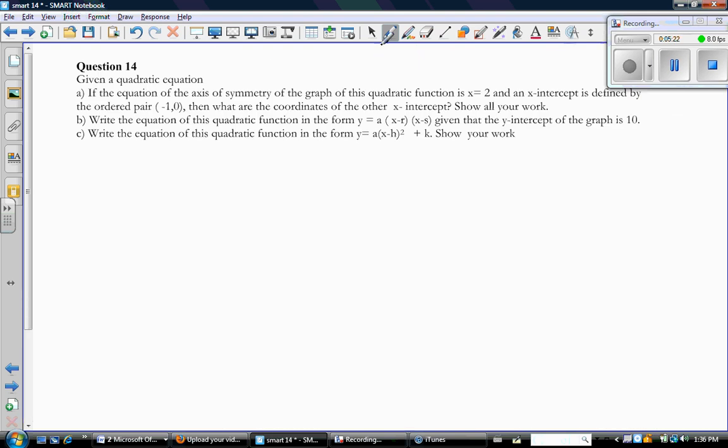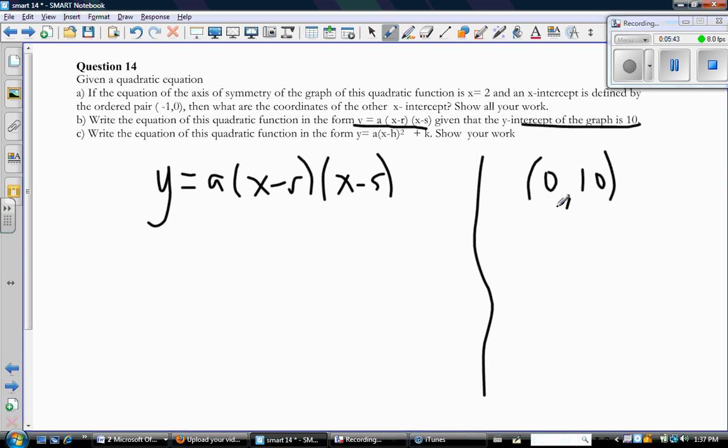B says to write the equation of this quadratic in factored form, given that the y-intercept of the graph is 10. So here's what factored form looks like, and here's the information I know. The y-intercept is 10, so here's the y-intercept. It's a point. I also have my two roots here.